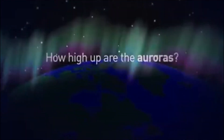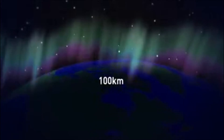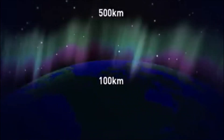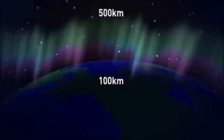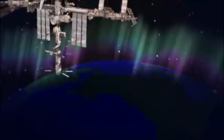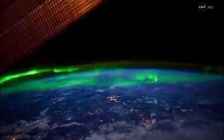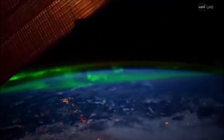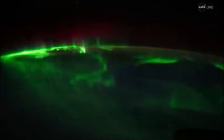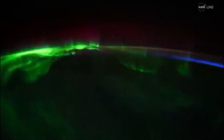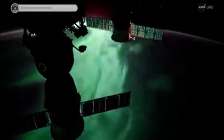How high up are the auroras? Aurora are between 100 and 500 kilometers above the surface of the Earth. The International Space Station orbits at about 400 kilometers above the surface. Astronauts on the space station often get a side view of the aurora, which can give an unbelievable show, showing you just how tall an aurora can be.